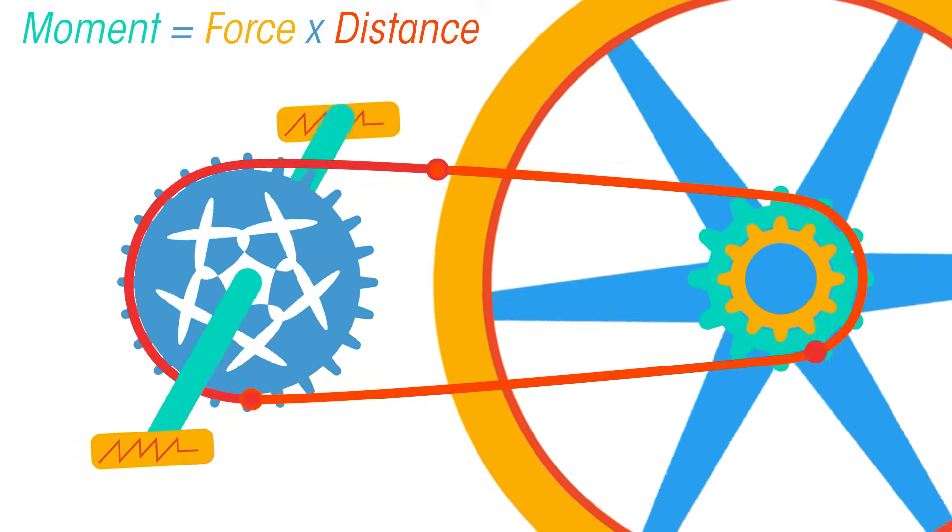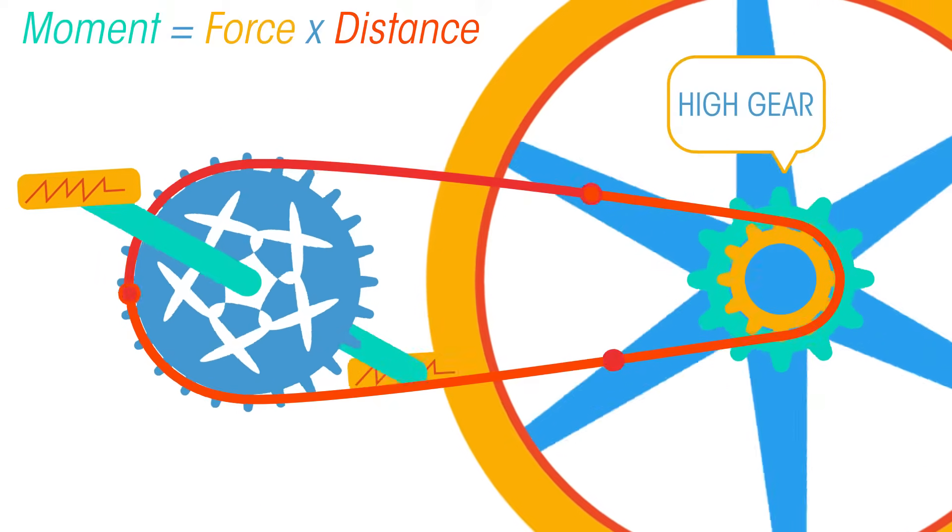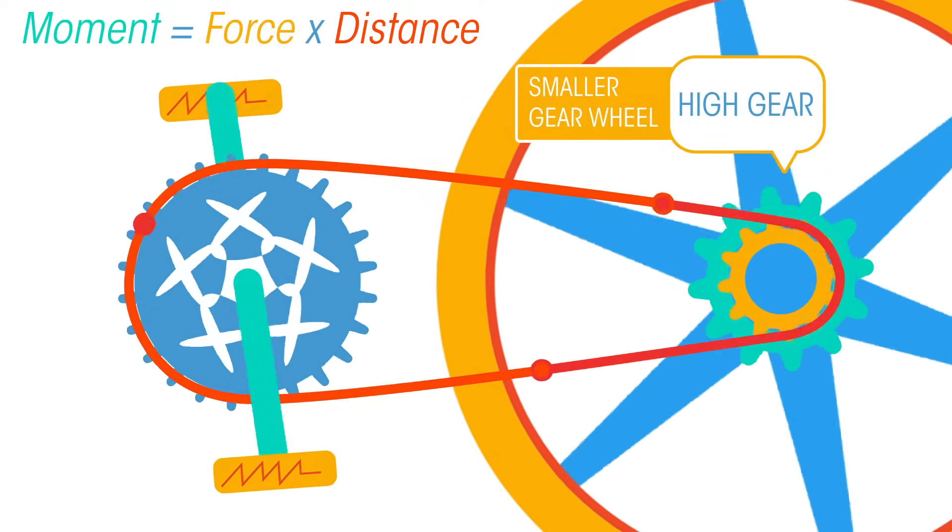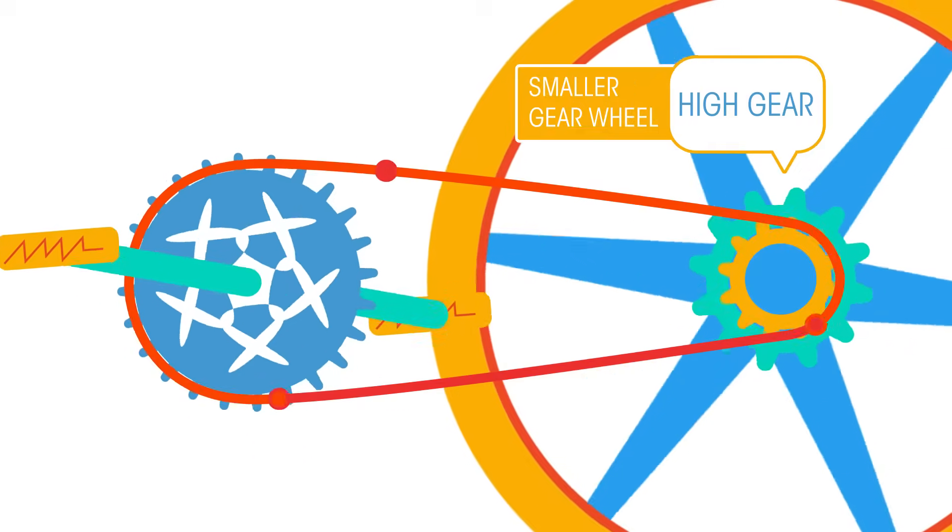Whereas to go quickly, you select a higher gear, which is a smaller gear wheel. Your force gives a smaller moment, but turns the wheel much more quickly.